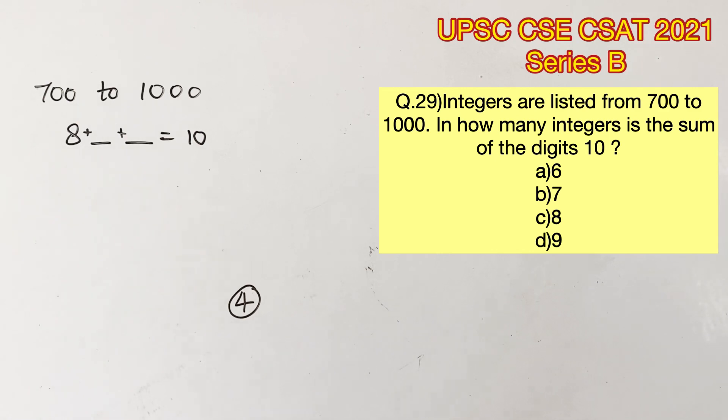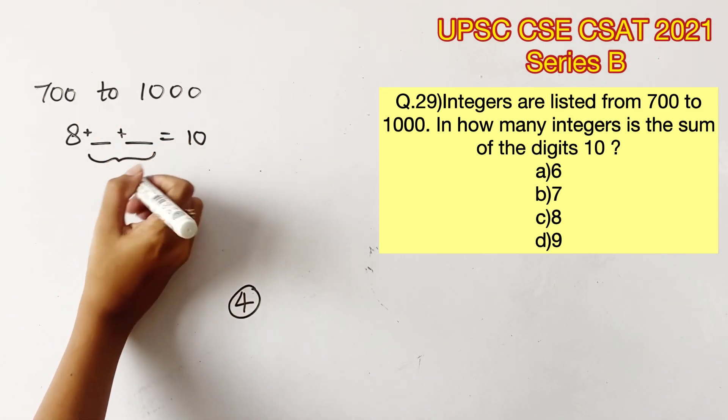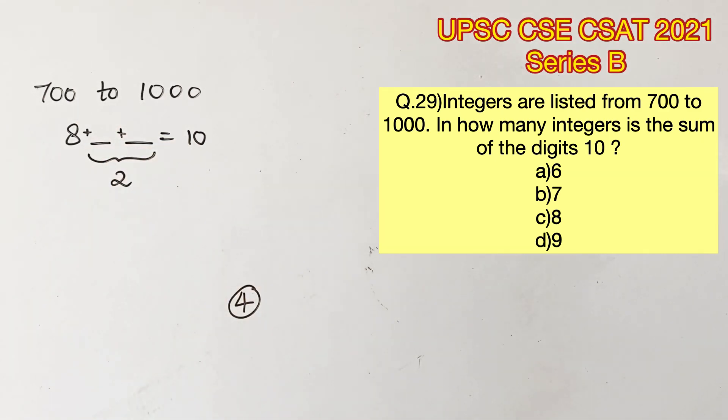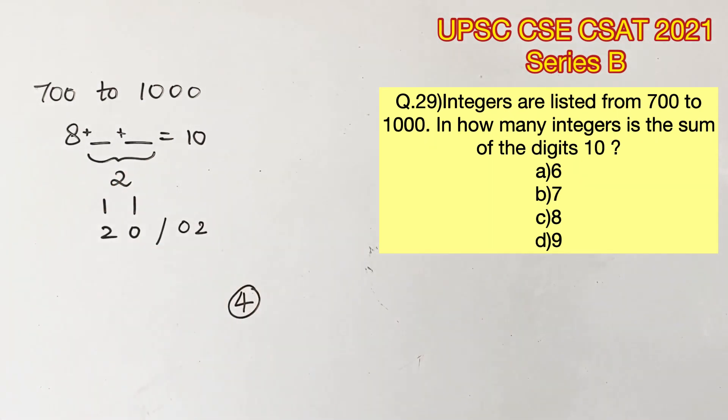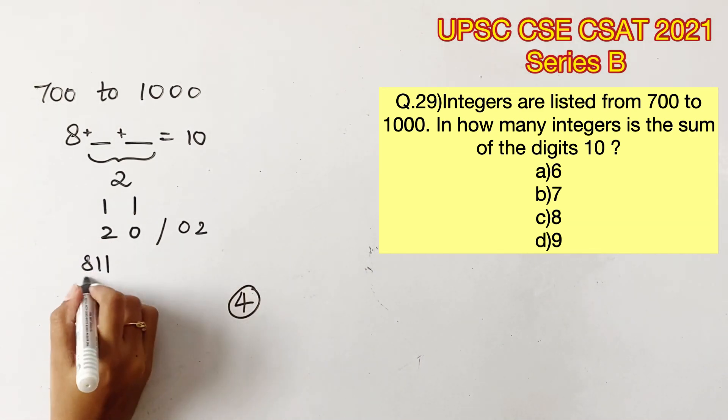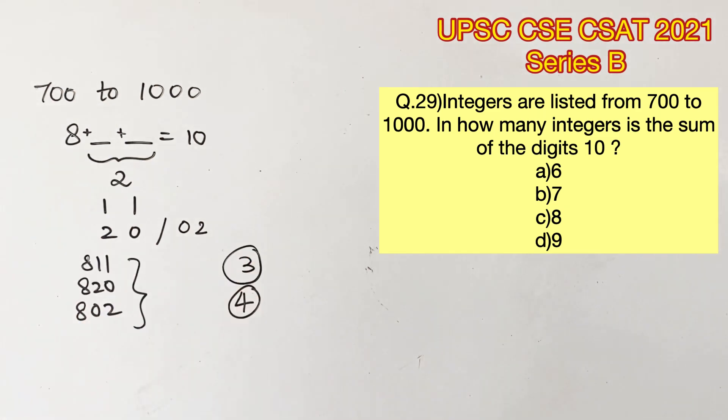Let's check for the possibilities when the first value is 8. So these two should add up to 2 because 8 plus 2 gives us 10. The only possibilities that can add up to 2 are 1, 1 or 0, 2 or 2, 0. So the numbers would be 811, 820 and 802. So there are three possibilities.